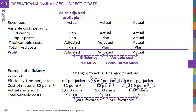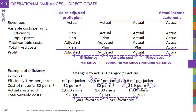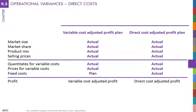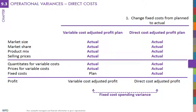Direct fixed costs are easier to analyze because there is no efficiency variance. Differences between planned and actual fixed costs are only due to spending — either the resources were more or less expensive than planned, or management decided to spend a different amount of discretionary costs. For instance, faster growth may require renting additional space that was not planned, management may see an opportunity to build the brand and spend more on advertising than planned, or lower growth may create unplanned excess capacity.